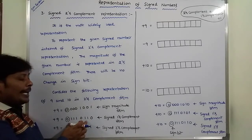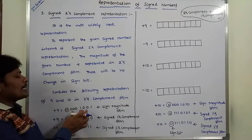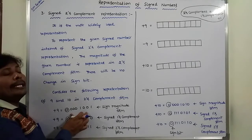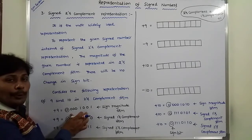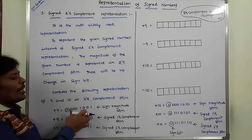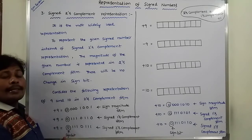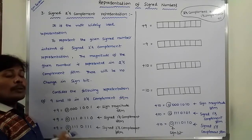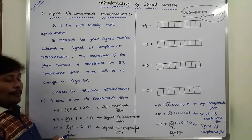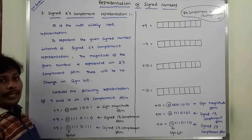This is the signed one's complement representation, and the other is the signed magnitude form representation. Now, how do we get the signed two's complement representation of plus 9?